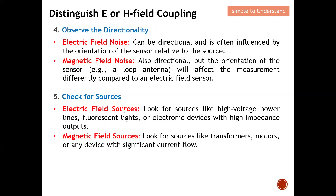Checking the environment for noise sources is also helpful. Electric field sources include high-voltage power lines, fluorescent lights, and electronics with high-impedance outputs — anywhere there is a significant voltage difference. Magnetic field sources include transformers, motors, and any device drawing significant current — the higher the current, the stronger the magnetic field coupling.